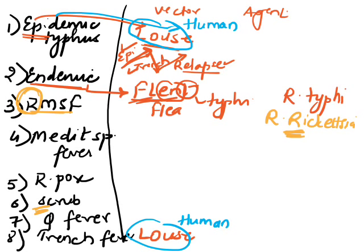Similarly, for scrub typhus, S stands for S — the causative agent is Orientia tsutsugamushi. So remember: Rocky Mountain is Rickettsia rickettsii, and scrub typhus is tsutsugamushi.